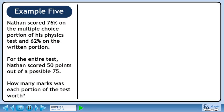Nathan scored 76% on the multiple choice portion of his physics test and 62% on the written portion. For the entire test, Nathan scored 50 points out of a possible 75. How many marks was each portion of the test worth?